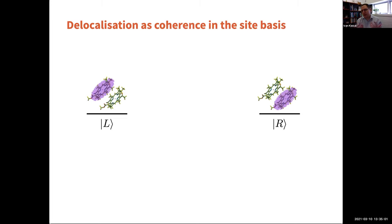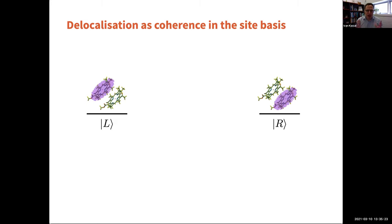The word coherence gets used in many different ways — I've counted about six or seven, some mutually exclusive. I'll talk about the one I think is most important. Dynamical coherence is about things that are waving over time. But delocalization among different molecules or atoms is also a form of coherence because it preserves definite phase relationships between different subunits.